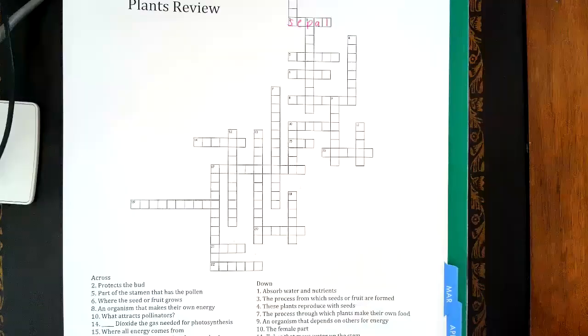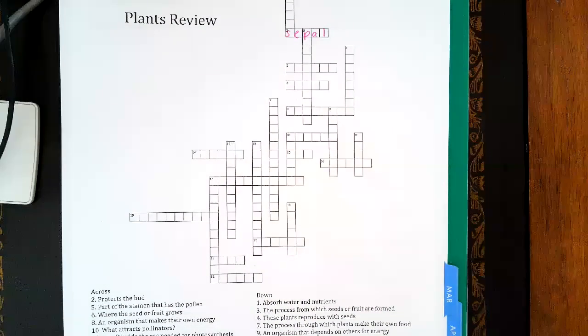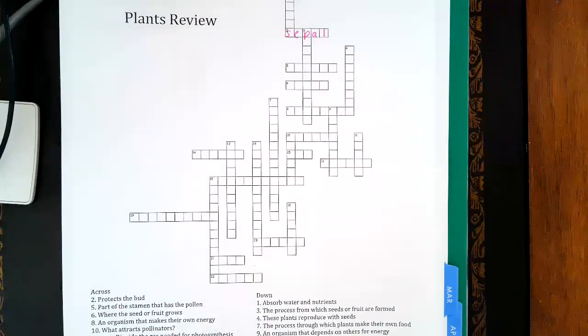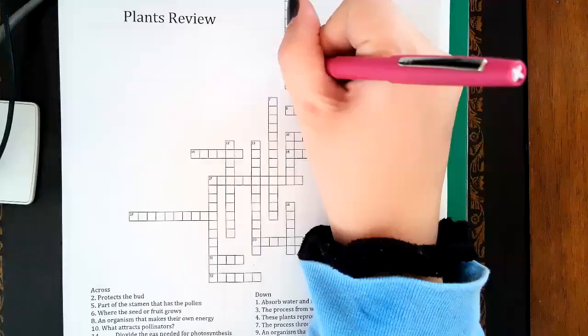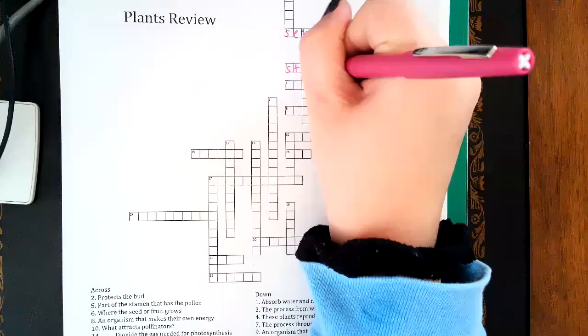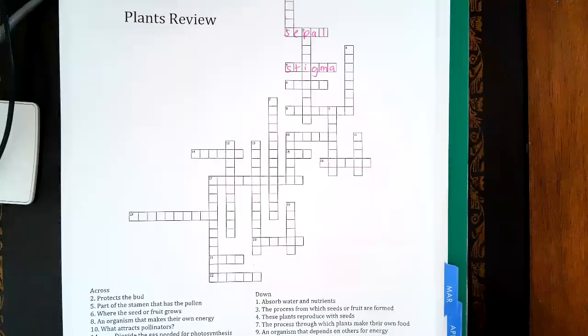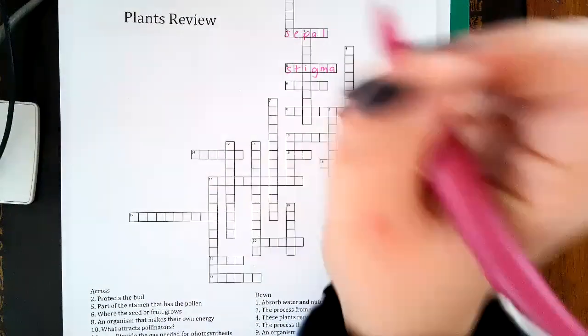Hopefully you guys can see that. Number five: part of the plant that has the pollen - that is the stigma. Number six: where the seed or fruit grows - that would be the ovary.